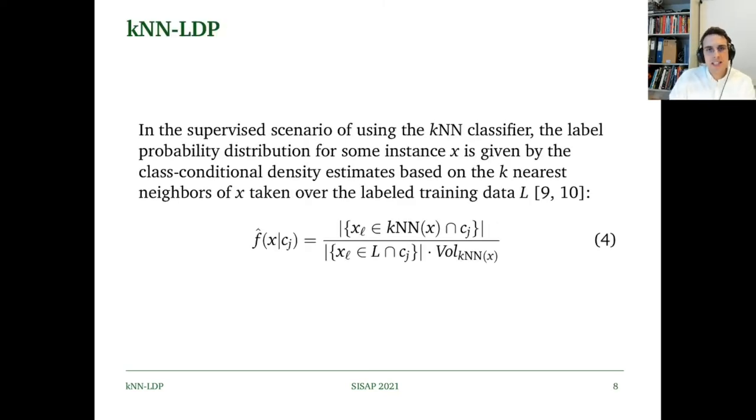To test out this general schema, we employed a k-nearest neighbor classifier to give us our probability density estimates. In equation 4, we have our class-conditional density estimate for class C_j. This is equal to the cardinality of the set of points in the k nearest neighbors of X with the label C_j, over the cardinality of the set of points in L with the label C_j, multiplied by the volume encompassing the k nearest neighbors, which is a k-NN hypersphere if we are in Euclidean space.